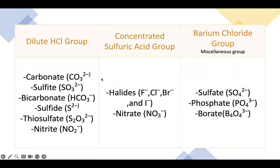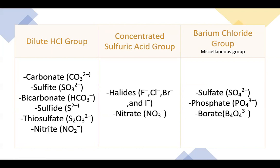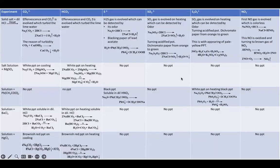The anion means that it has a negative charge, so we call it an acidic radical. There are three groups: first, the dilute HCl group, which includes carbonate, bicarbonate, sulfite, sulfide, thiosulfate, nitrate, and nitrite. Second, the concentrated sulfuric acid group, which includes halides — fluorine, chlorine, bromide, iodide — and also nitrate. The third group we call the miscellaneous group, or barium chloride group, which includes sulfate, phosphate, and borate. Students must know the symbol of each anion and how to differentiate between these groups.